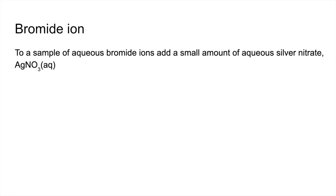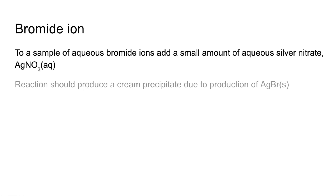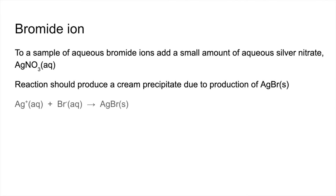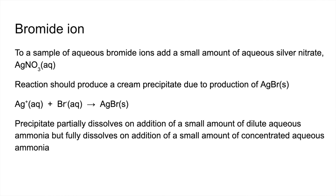Bromide ion now — same procedure as before. This time we get a cream precipitate from the production of solid AgBr. The backup confirmation test uses concentrated aqueous ammonia, in which the precipitate will dissolve. Note it only partially dissolves if dilute aqueous ammonia is used.